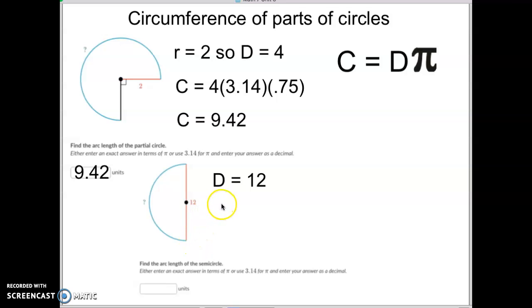And so we're going to plug into our formula. That's circumference equals the circumference equals the diameter times pi. And then because we only have a half a circle, I'm going to multiply that by 0.5.